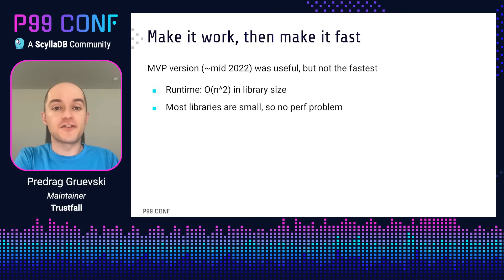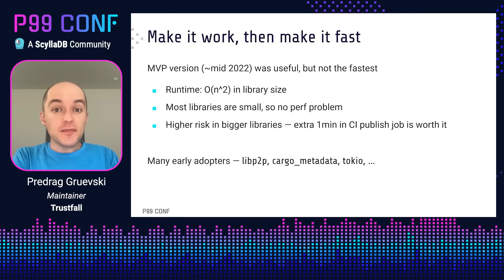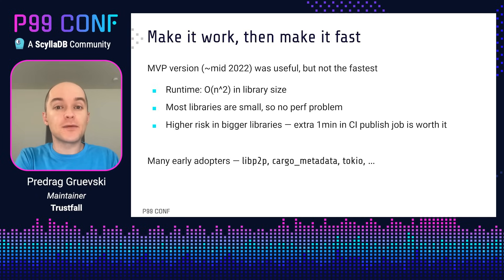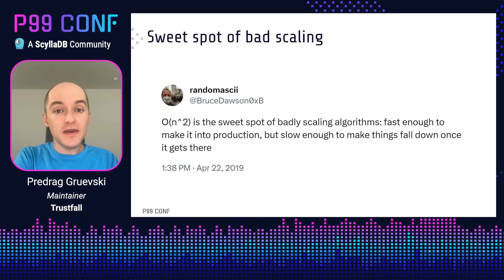The initial version of Cargo Semverchecks was published a little over a year ago, and it was not the fastest. Its runtime scaled as O(N²) with library size. Fortunately, most libraries are small, so this wasn't a huge performance problem. Over time, it started being adopted in some bigger libraries as well. It added about an extra minute to their publishing pipeline, but this was worth it because they were also at higher risk of accidental breaking changes.